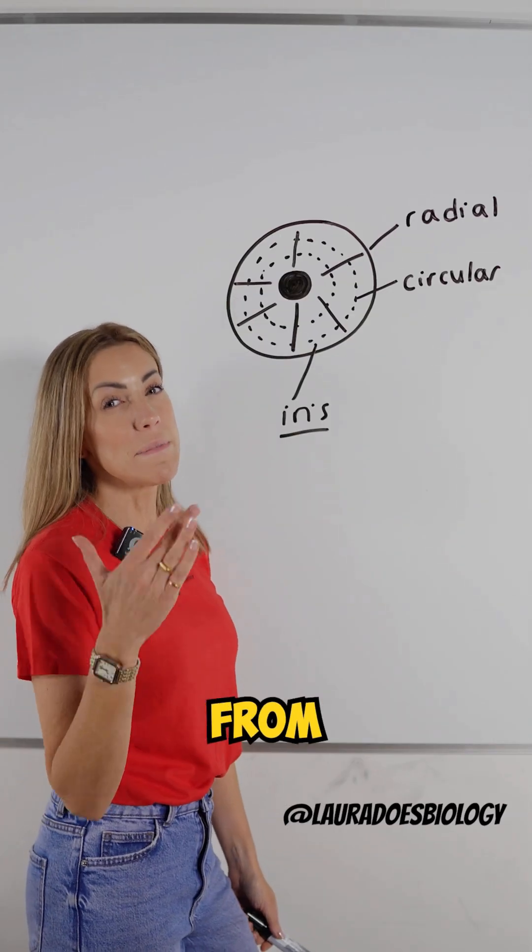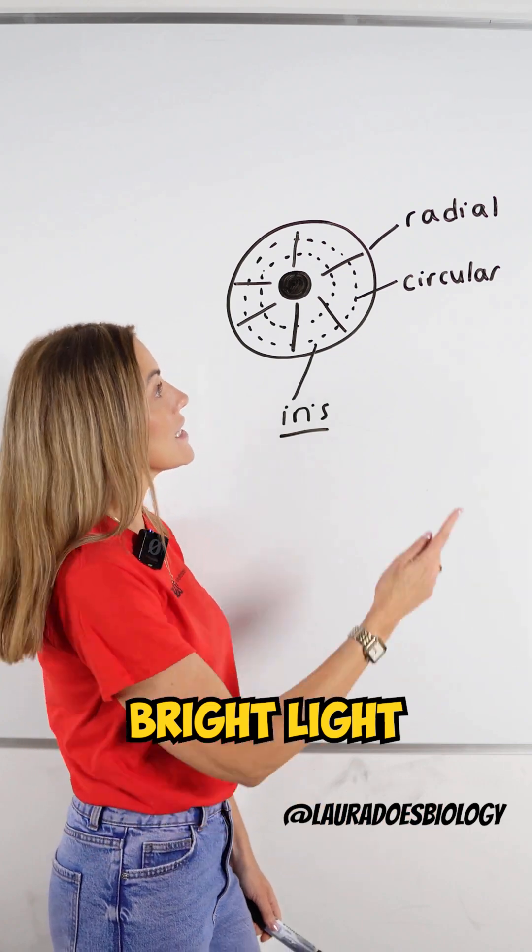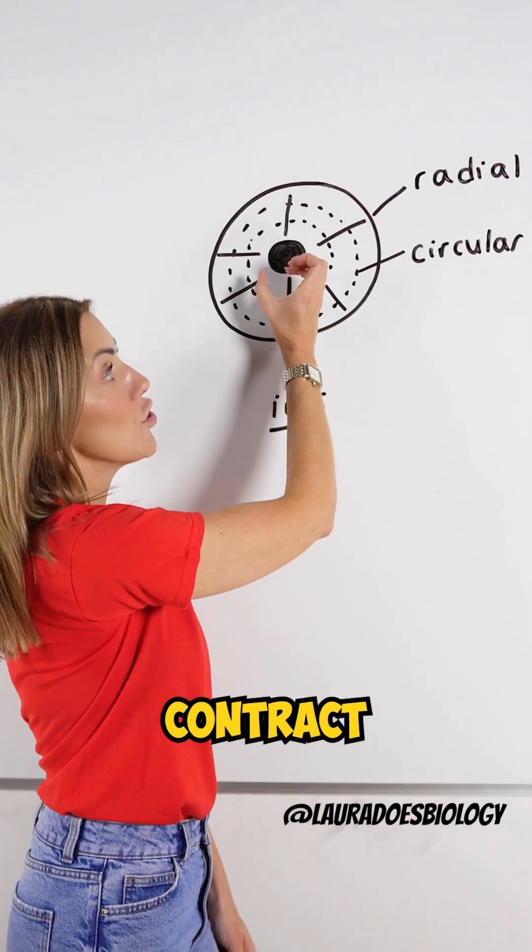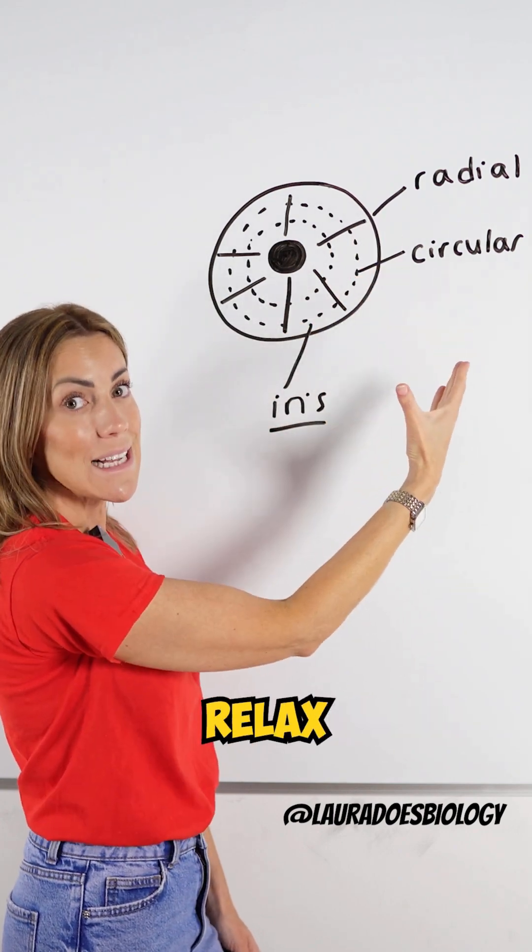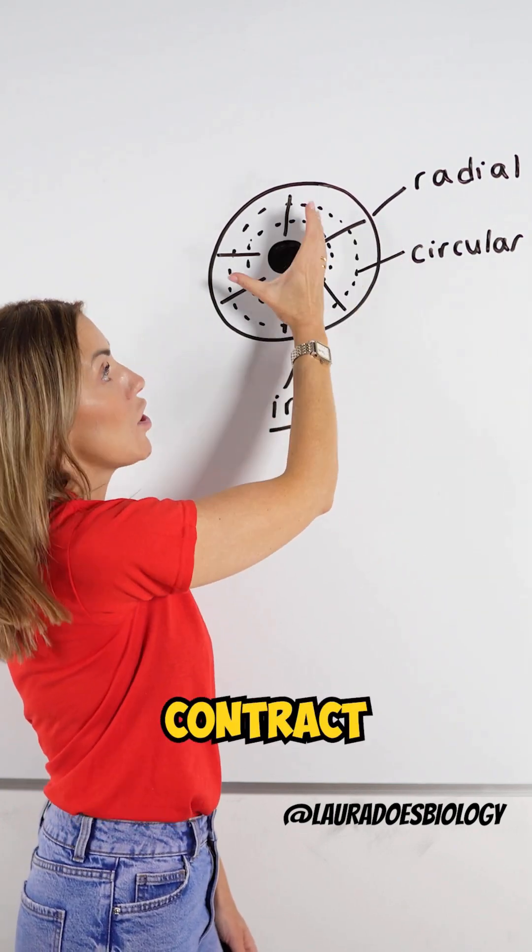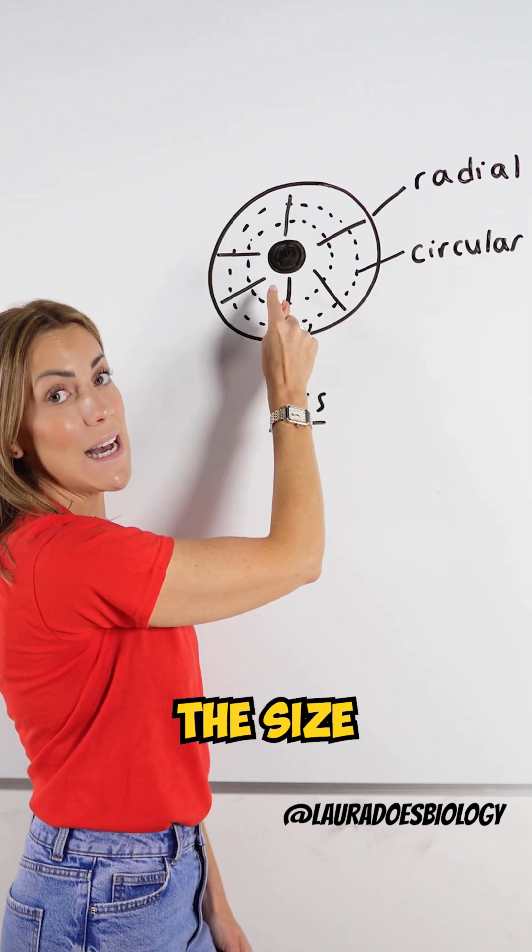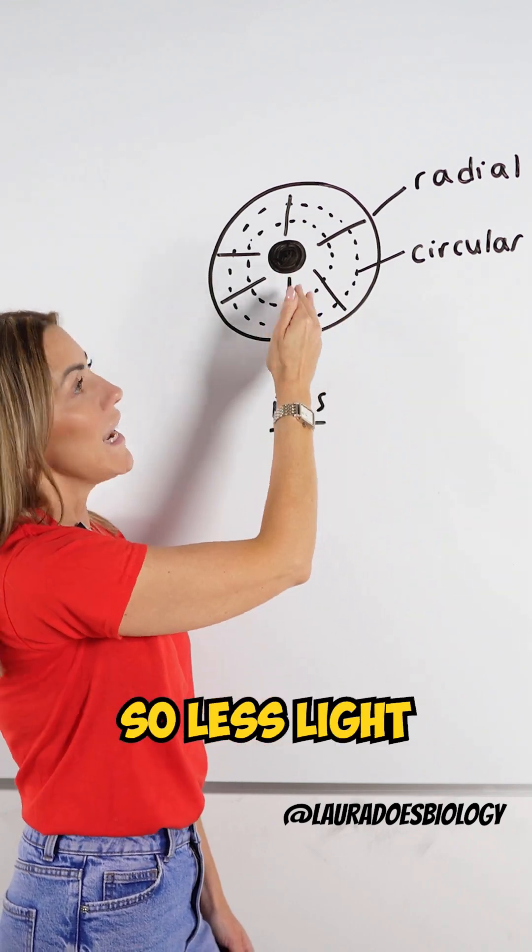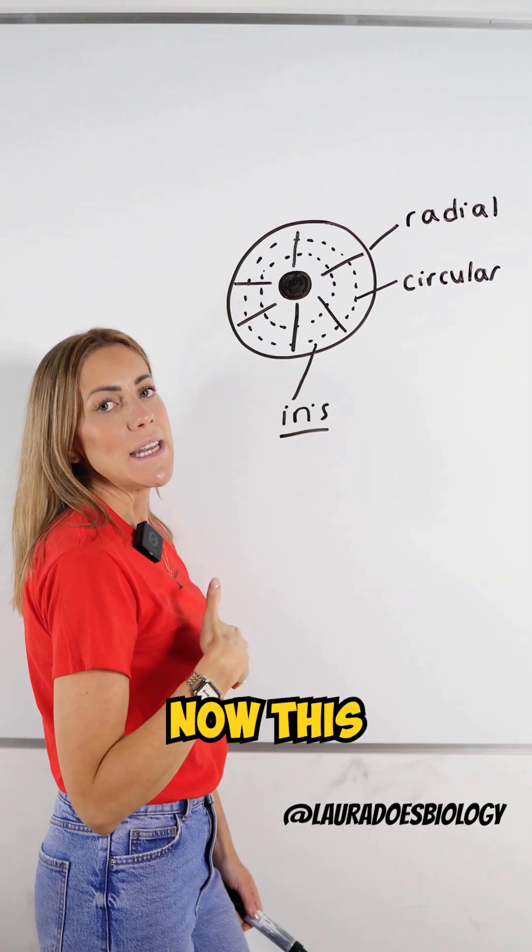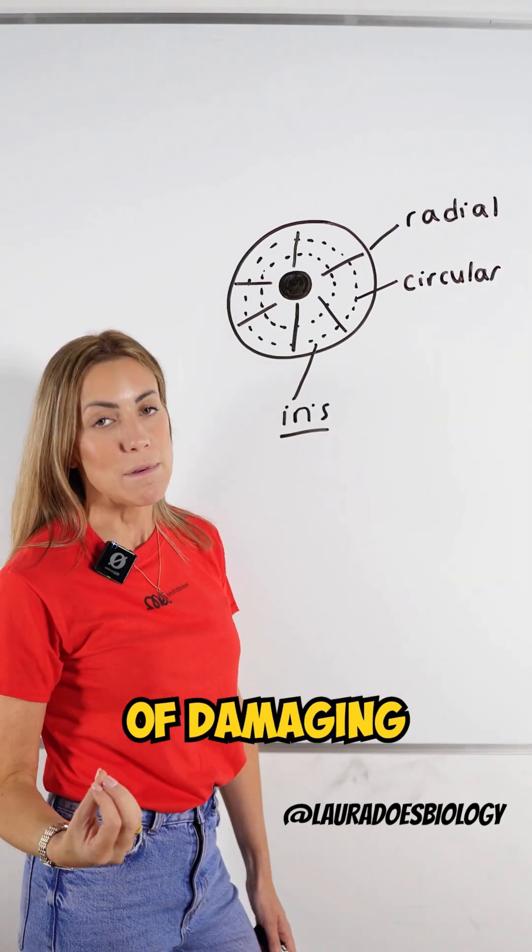When moving from dim light into bright light, the circular muscles contract whereas the radial muscles relax. As the circular muscles contract, this makes the size of the pupil smaller so less light enters the eye. This means there's less chance of damaging your retina.